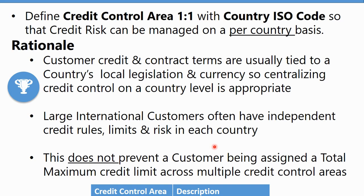I would not recommend having a group that spans countries, because it becomes difficult to manage credit risk across multiple countries effectively, although you can still see it in reporting. My recommendation is to go one-to-one with country, not one-to-one with company code. If you have one credit control area per company code, you end up with many credit control areas to map to and multiple credit limits to set, as opposed to one credit limit per country per customer — a pragmatic approach that's been pretty successful. Obviously in your individual business circumstances you'll have to make your own decision.